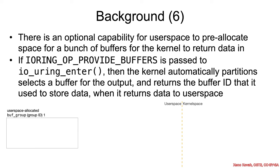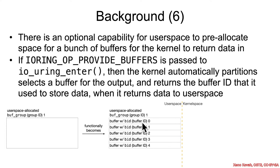One extra piece of information relevant to this vulnerability: there's an optional capability for user space to pre-allocate space for a bunch of buffers for the kernel to return data in. Instead of dealing with individual buffers per call, it creates a whole group of them and the kernel selects them. If the IORING_OP_PROVIDE_BUFFERS option is passed to io_uring_enter, the kernel takes the large allocation user space provides, breaks it into many smaller buffers of a size the user space application specifies, and then returns data saying it was placed in buffer ID 0, or buffer ID 1. User space determines where in that giant buffer the data was placed based on the buffer ID returned.